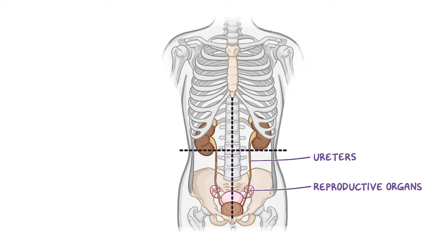So in genetically female individuals, the lower quadrants also contain the ovaries and parts of the uterus, while in genetically male individuals, the spermatic cords can be found.